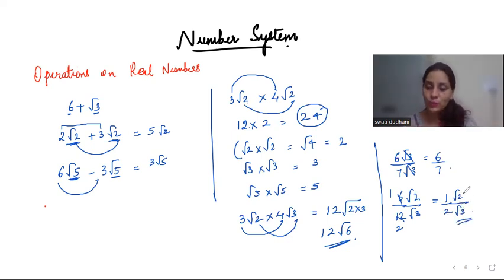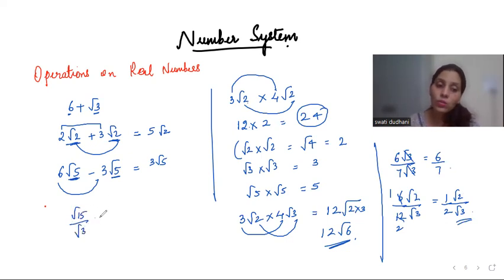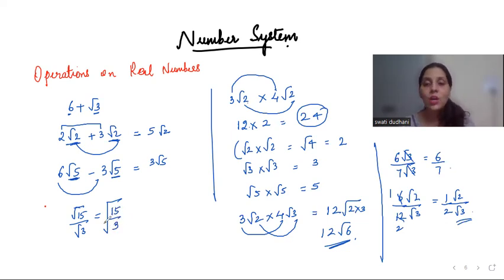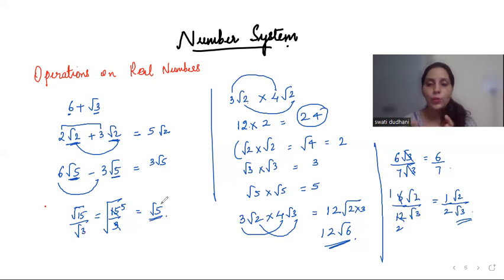Let's take another example: root 15 divided by root 3. I can combine them under one root as 15 by 3 under root, because both have a root. Then reducing, 3 fives are 15, so we end up with root 5 as the answer. Roots can be combined this way in both multiplication and division.